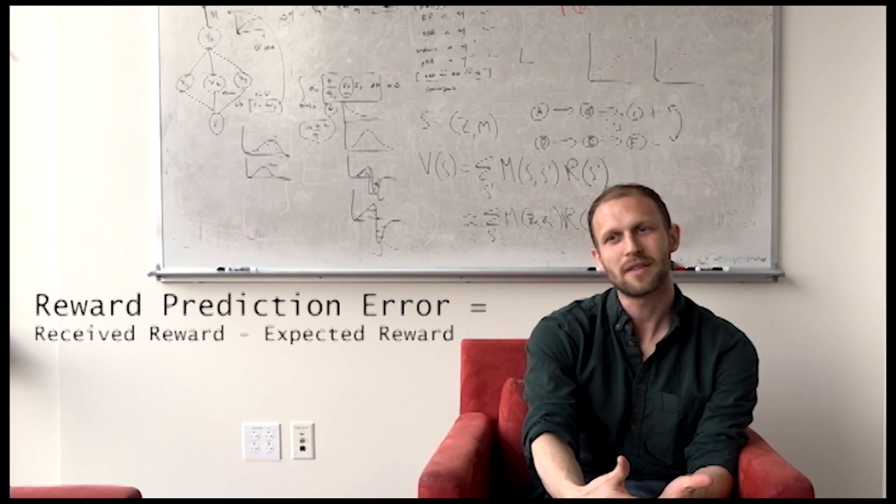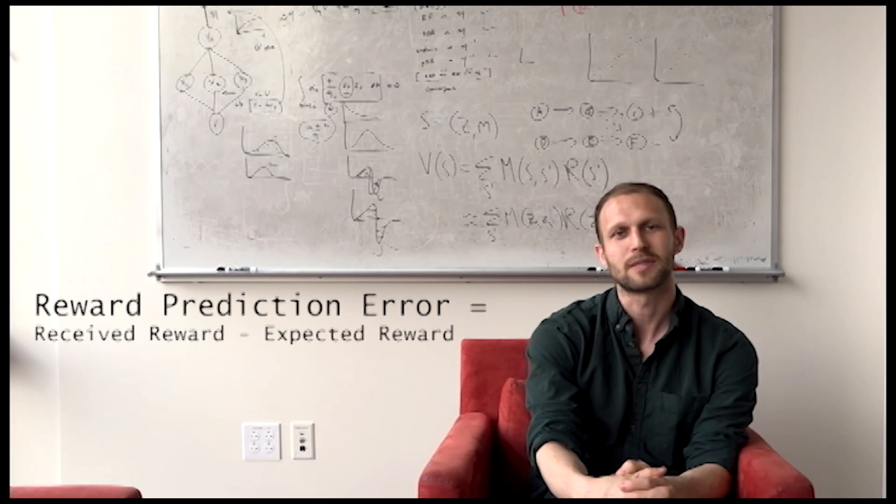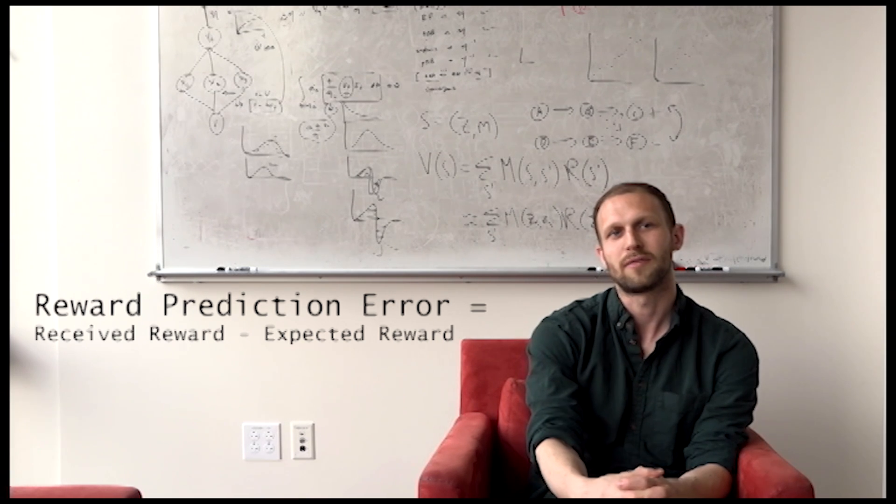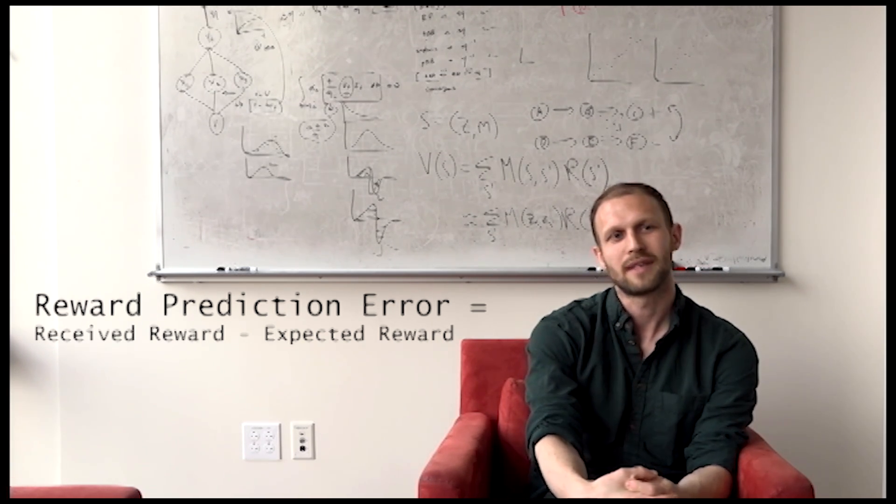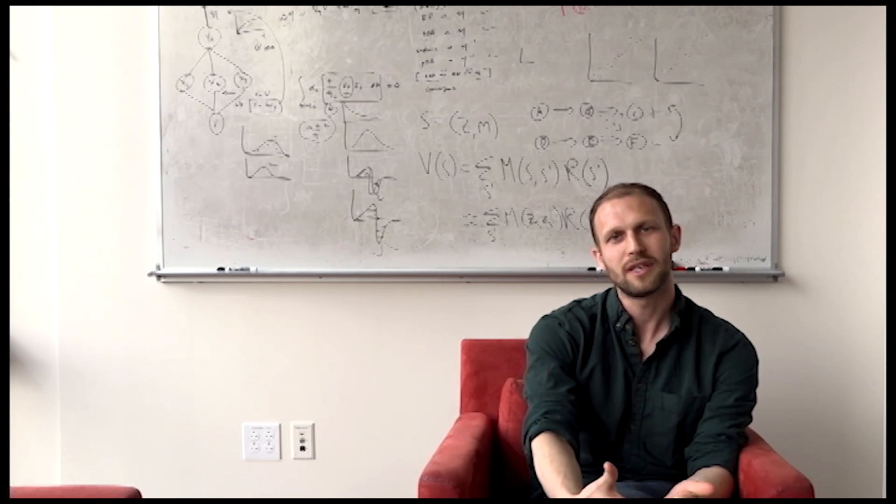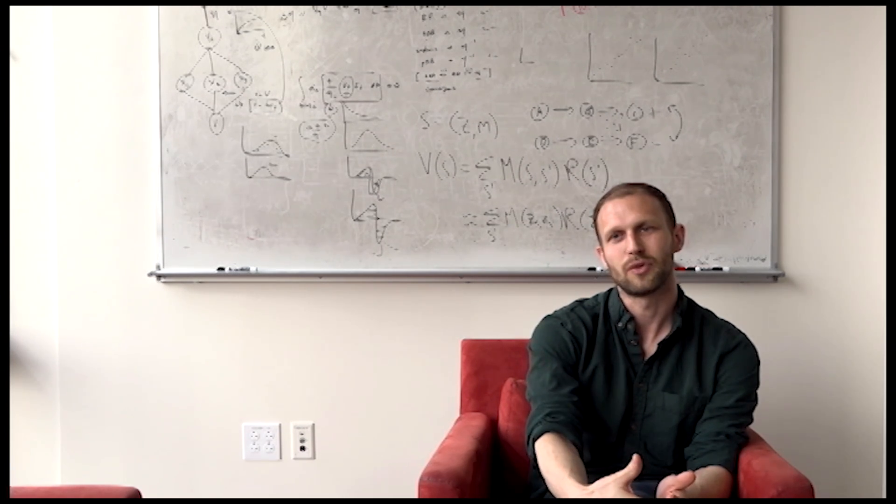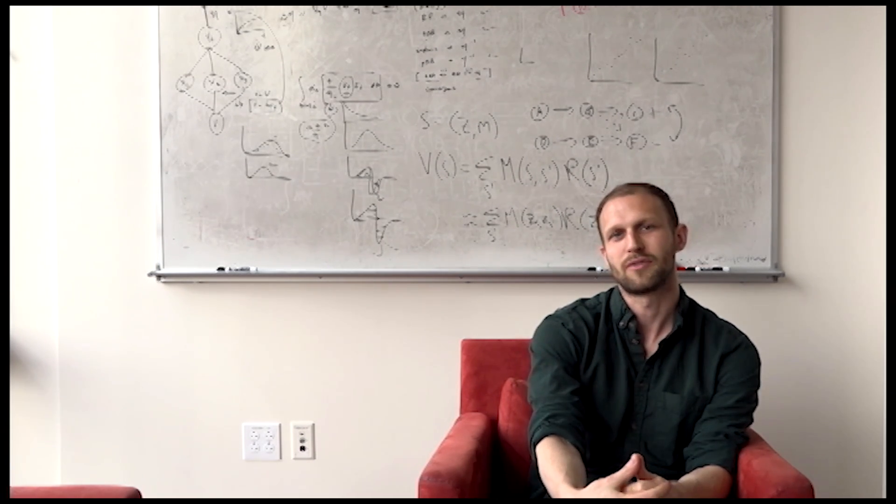And the key evidence for this hypothesis was the observation that when reward is entirely expected, there's no phasic dopamine response. It's only when the reward is unexpected that we see a burst of dopamine. And over the intervening years, this hypothesis has been refined in various ways, and today we're going to tell you about one particular refinement.